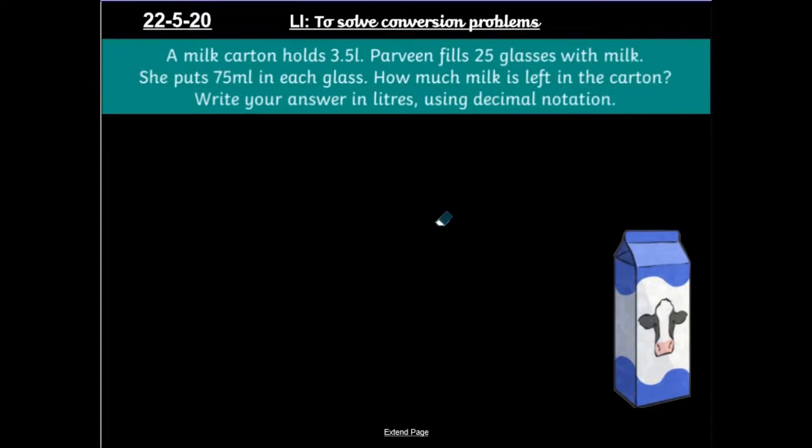Then let's have a look at a slightly different question here. So a milk carton holds 3.5 litres. Now Parveen fills 25 glasses with milk, and she puts 75 millilitres in each glass. How much milk is left in the carton? Write your answer in litres using decimal notation. So using decimals at the end. So what I'm actually trying to find out here is not how many glasses I can have, but how much milk is left in the carton at the end. So let's look at the important information here. The milk carton holds 3.5 litres. That's quite important. So I've got three and a half litres of milk. And I know that she's filled 25 glasses with milk, and there are 75 millilitres in each glass. How much milk is left?